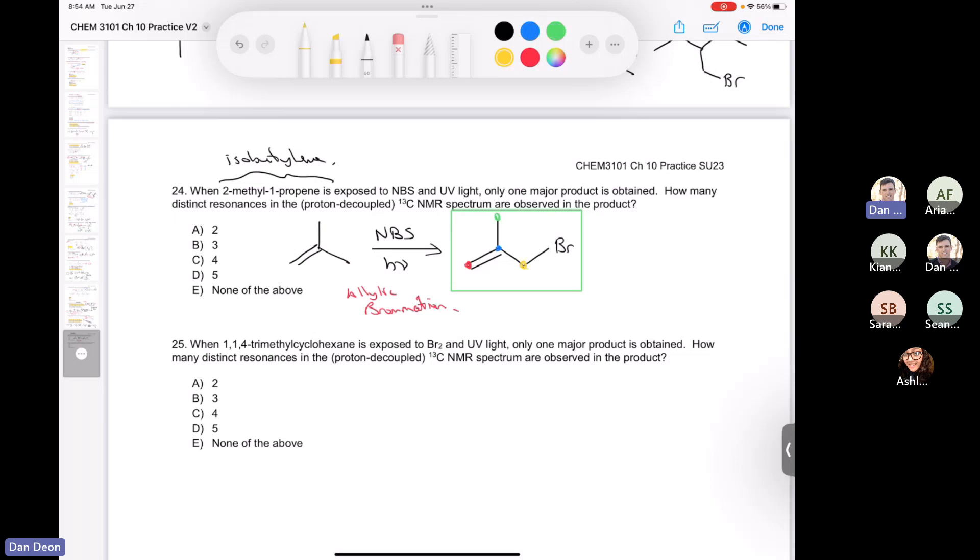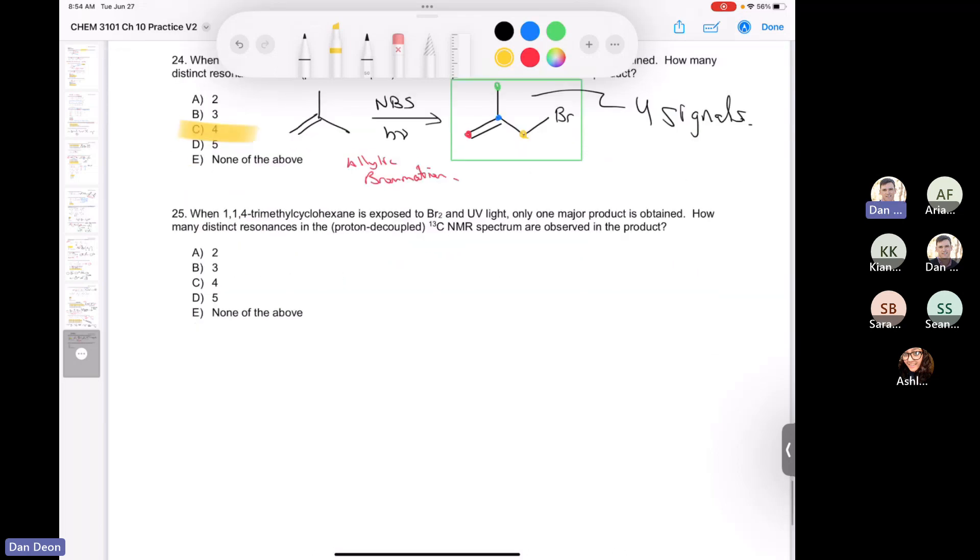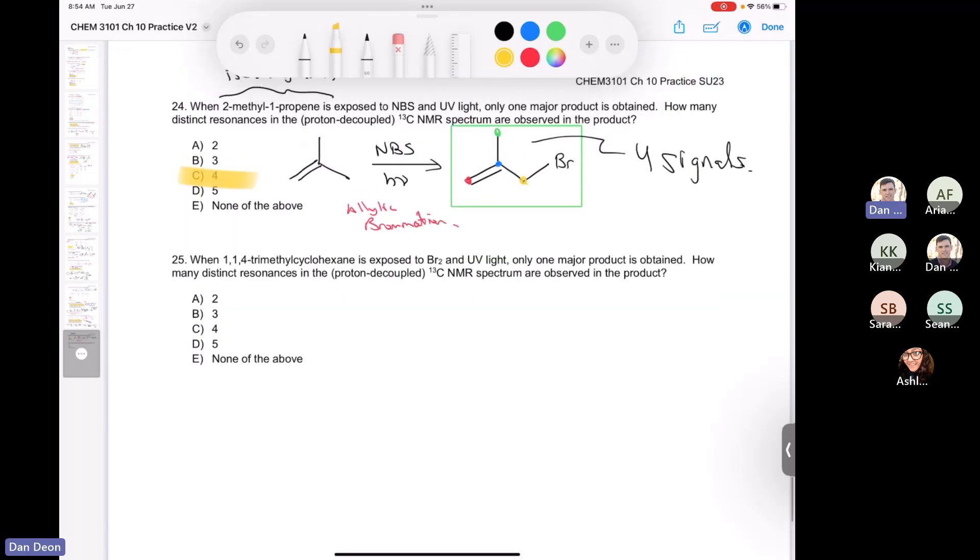And then you can see that this carbon is unique and this carbon is unique. So like Sarah said, there are a total of four signals. So four signals in the carbon-13 proton decoupled, so the answer is four signals.